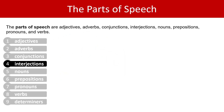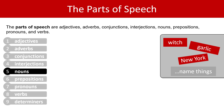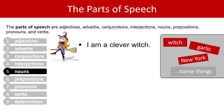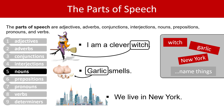Next, let's do nouns. Nouns name things. Everything we talk about has to have a name so we can talk about it. Here are some examples: witch, garlic, New York. 'I am a clever witch' — the noun 'witch' is the word we use for this. The noun 'garlic' is the word we use for this. 'We live in New York' — the noun 'New York' is the word we use for this. So nouns can name people, places, and all things.